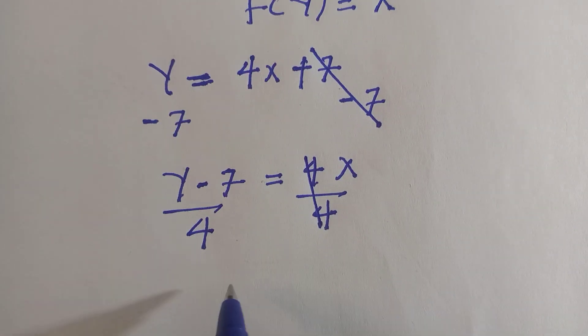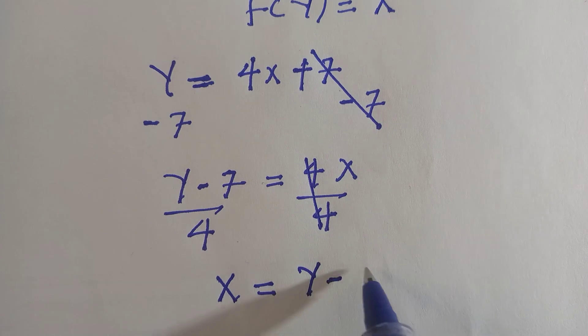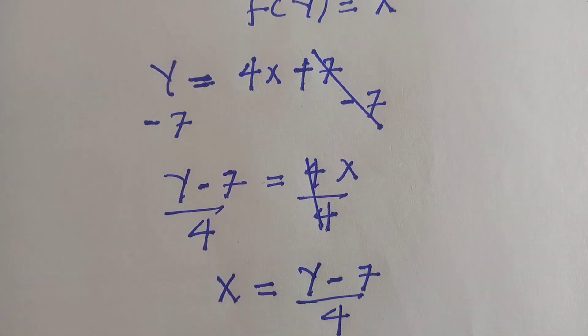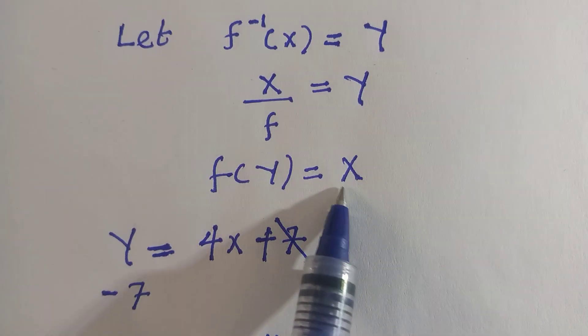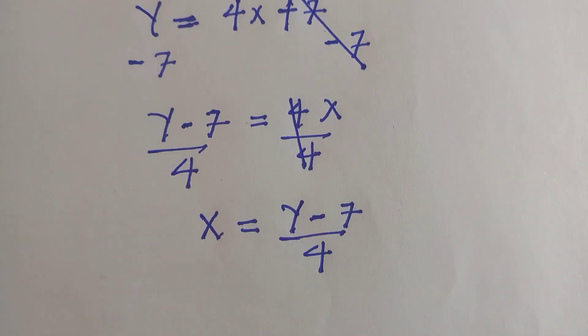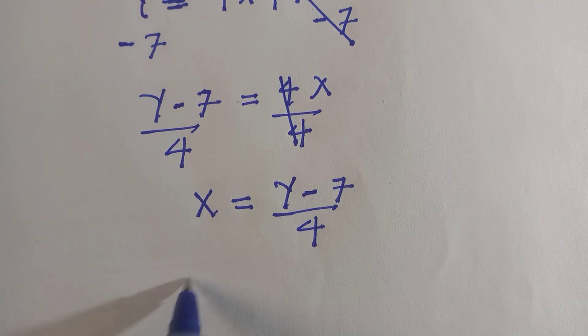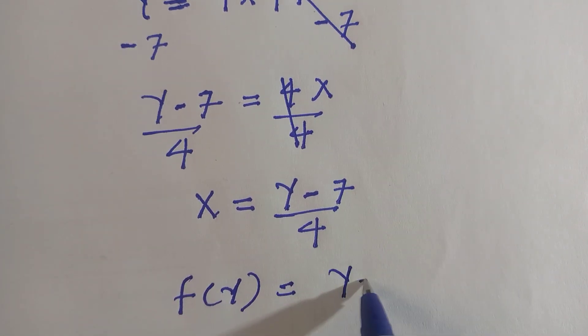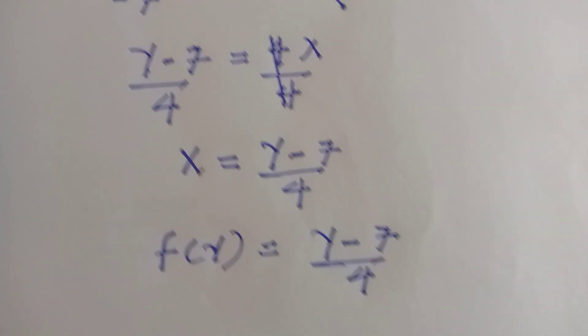Then we have x equals y minus 7, everything divided by 4. And what we let above as well, f of y equals x, I will have x here, so which means we replace it with f of y. And here we have f of y equals y minus 7 divided by 4.